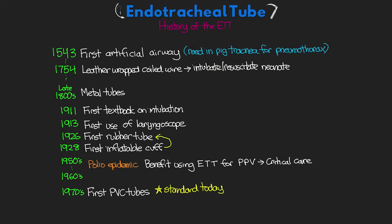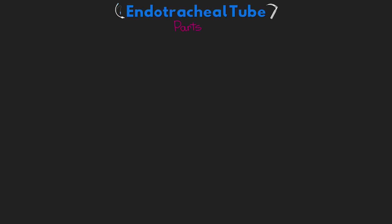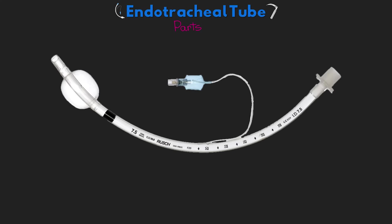Let's talk about the different parts of our endotracheal tube. Most ET tubes used today have a fairly standard design with standard markings and some slight variation in appearance. The first part is the tube itself — the main body of the ET tube and the pathway for air to move into and out of the lungs. ET tubes come in different sizes referring to both the diameter and the length.